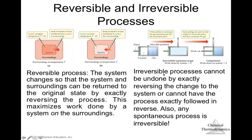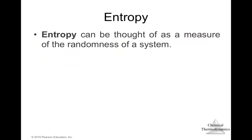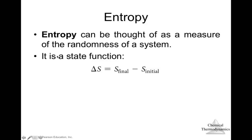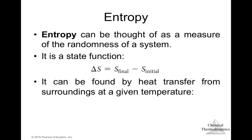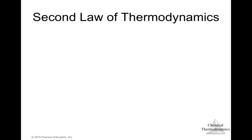Entropy can be thought of as a measure of the randomness of a system. Entropy is a state function, so the change in entropy equals the final entropy minus the initial entropy — it doesn't matter how the system moved from initial to final state. The entropy change can be found from the heat transferred reversibly at a given temperature: delta S equals q_rev divided by T.